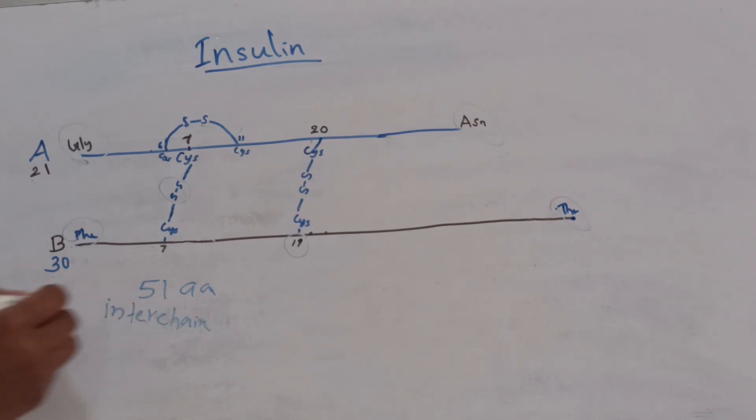These are inter-chain disulfide bonds because they are present between A and B chains. In addition to the inter-chain disulfide linkages, another one,